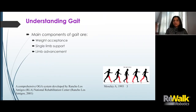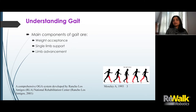Going back to our basics, gait has three main components. The first is weight acceptance. The second is the single limb support. And the third is limb advancement. Together, all three components help with locomotion — getting from one point to another on two feet.